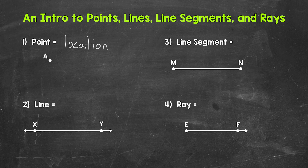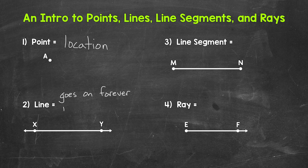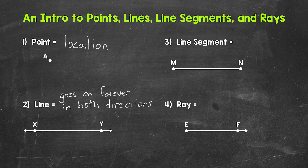Next, let's move on to lines. A line goes on forever in both directions. In other words, lines extend infinitely in both directions. So let's put 'goes on forever in both directions' for our notes. For our example, we have line XY. The arrows show that the line extends infinitely in both directions. Those arrows show that the line goes on forever in both directions.